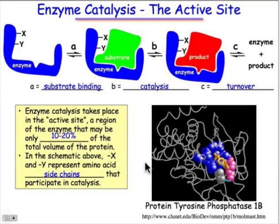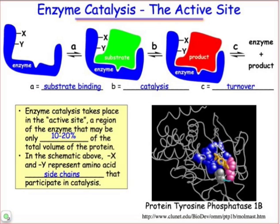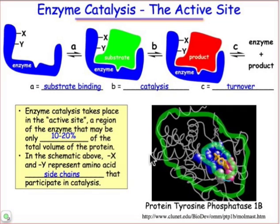A typical enzyme active site is shown here. This is the protein tyrosine phosphatase 1b. The enzyme active site, as you can see, is actually just a small portion of the enzyme — and that's where the substrate binds and where the side chains important in the enzyme's catalytic activity are found. All the rest of this, which might be 80% or 90% of the total volume of the protein, is involved really to serve as a scaffold to both house the substrate and position those side chains just where they're needed.